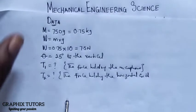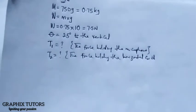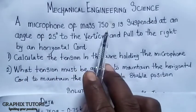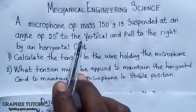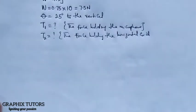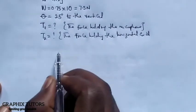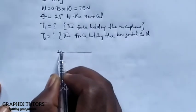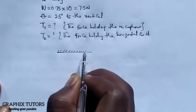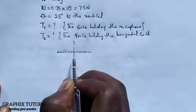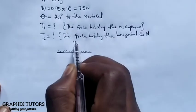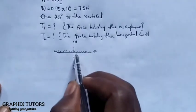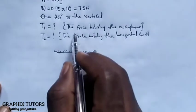Now let's put this in a diagram. A microphone of mass 750 grams suspended at an angle of 25 degrees to the vertical — when you see something suspended, that means it is hanging on something, probably a ceiling. So this is a ceiling. It is suspended to the vertical, so let's take a point on the ceiling to make a vertical: this is north, this is south, and the horizontal is east and west. This force is inclined to the vertical.